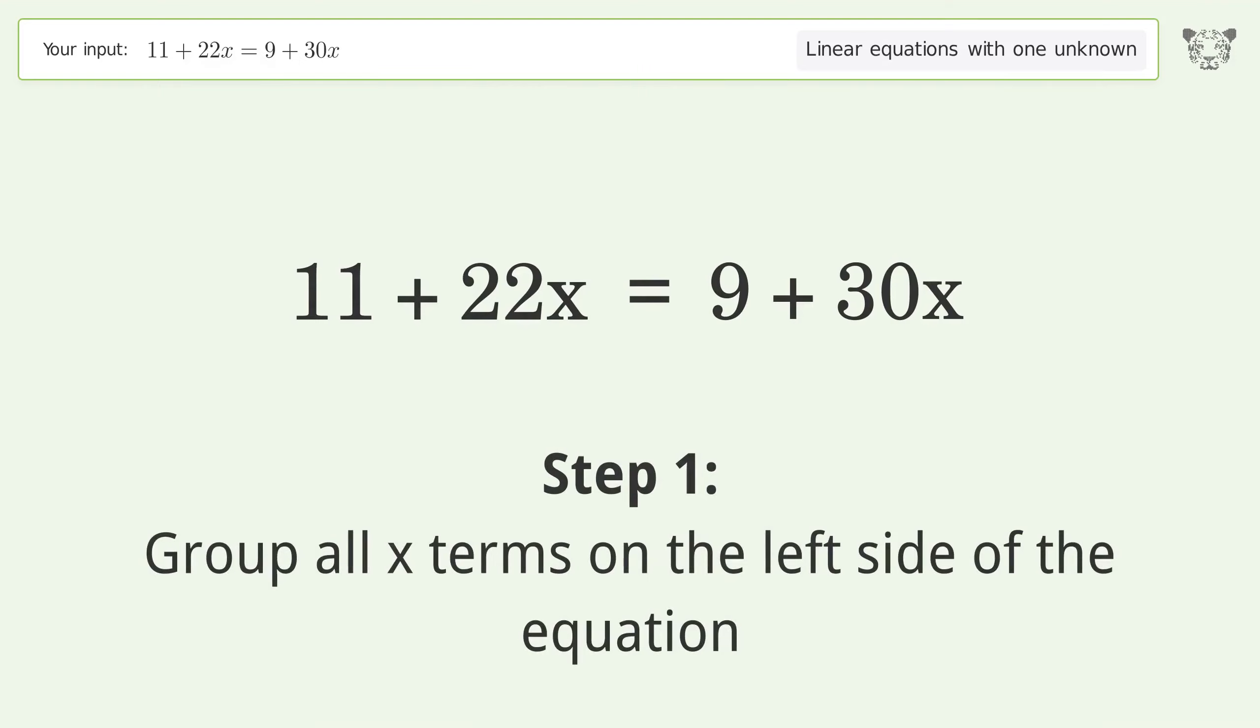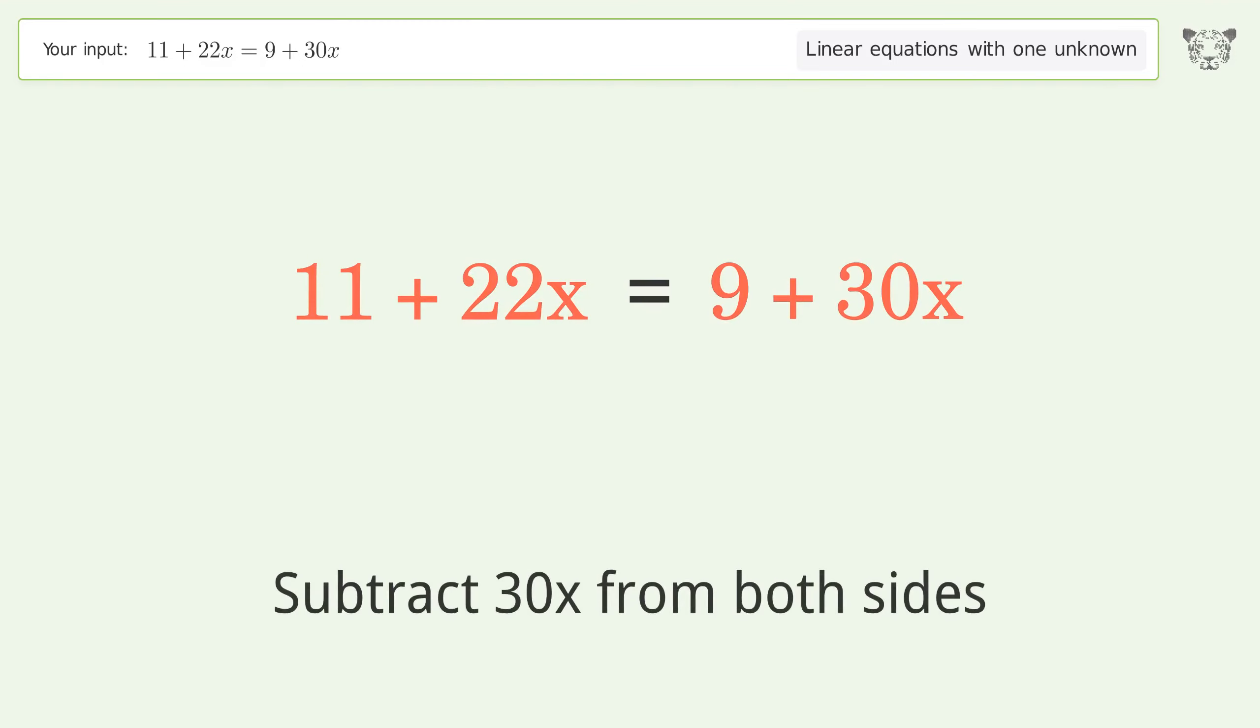Group all x terms on the left side of the equation. Subtract 30x from both sides.